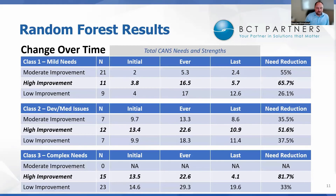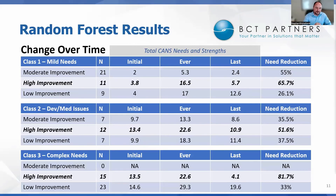The finding that really stood out was class three, the complex needs youth. None of these kids fell into the moderate improvement category — they all had two or more of the seven predictive items. But notice the difference between those who resolved to only one or none by their last assessment — the high improvement group — who saw an 81% reduction in need, compared to the low improvement group who saw only a 33% reduction. This is an opportunity for Kennedy Krieger to examine those high improvement cases, figure out what worked, and understand why those practices weren't applied to the low improvement kids. The model allows new youth to be run through it to determine their class and whether they have two or more of those predictive needs.